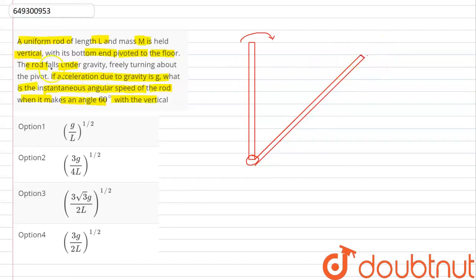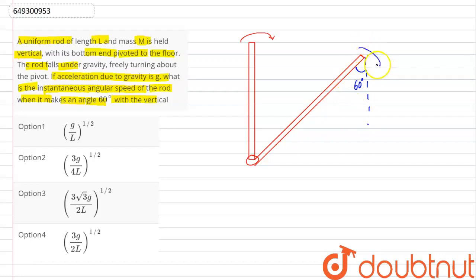We draw the figure showing the angle. The angle the rod makes with the floor is 60 degrees. At this point, we have to find the angular speed omega. Initially, the angular speed is zero.